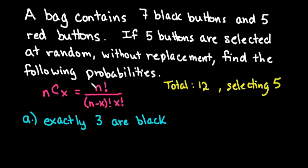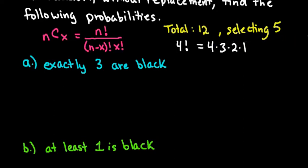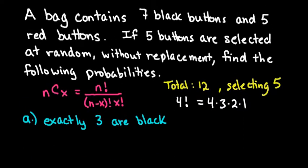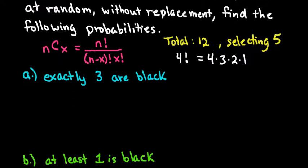For every situation, we are going to use our calculator to calculate this using the combinations formula. Just a reminder: the exclamation point notation means factorial — for example, four factorial means four times three times two times one. Since we are not replacing the buttons, the probability of selecting a black one changes every single time depending on the previous selection, which is why we use this formula.